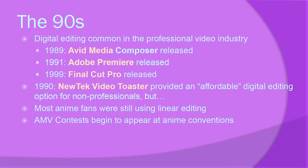In the 80s and 90s, Jim and other editors inspired by him almost exclusively had to do linear editing. By the 90s, digital technology was just starting to be used by the professional video industry — in other words Hollywood — but it was still too expensive for most anime fans. In 1990, the NewTek Video Toaster was one of the cheapest digital editing programs available, but even that was still a couple thousand dollars. Nonetheless, despite the difficulty, anime fans continued to produce AMVs in small numbers, and contests started appearing at conventions.